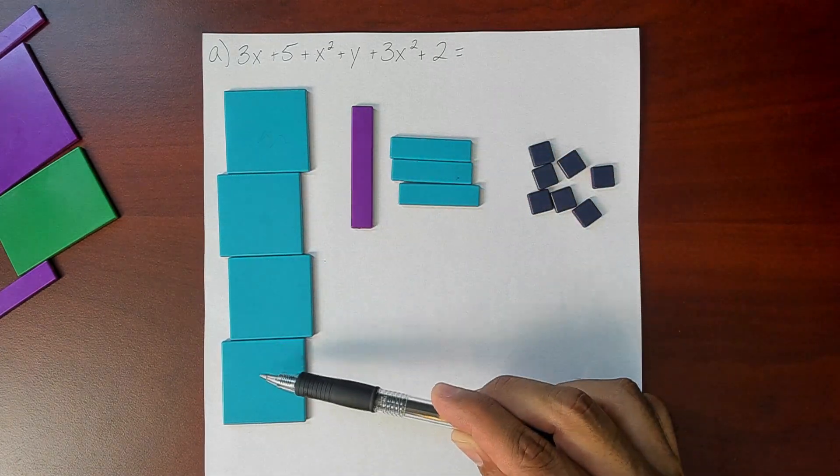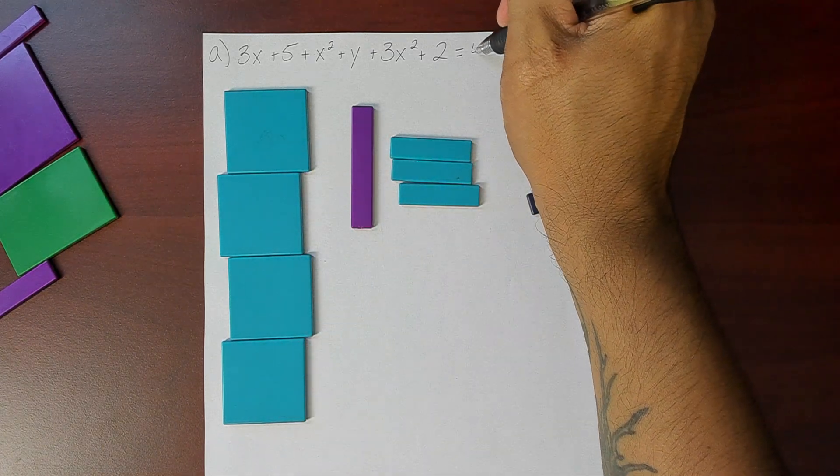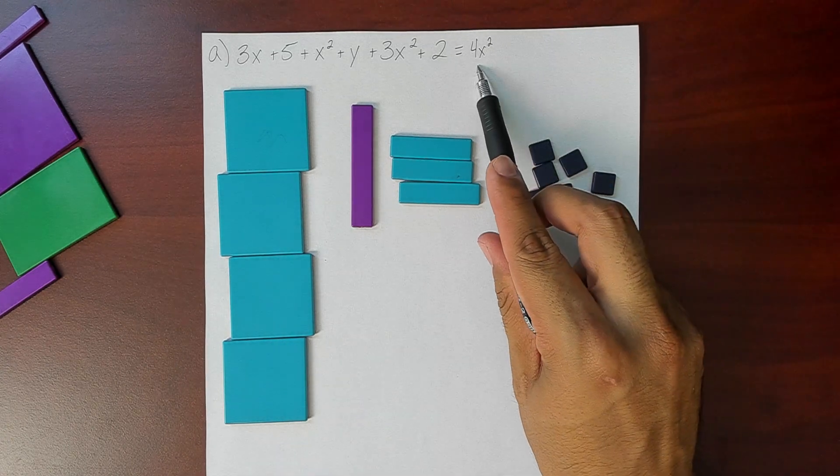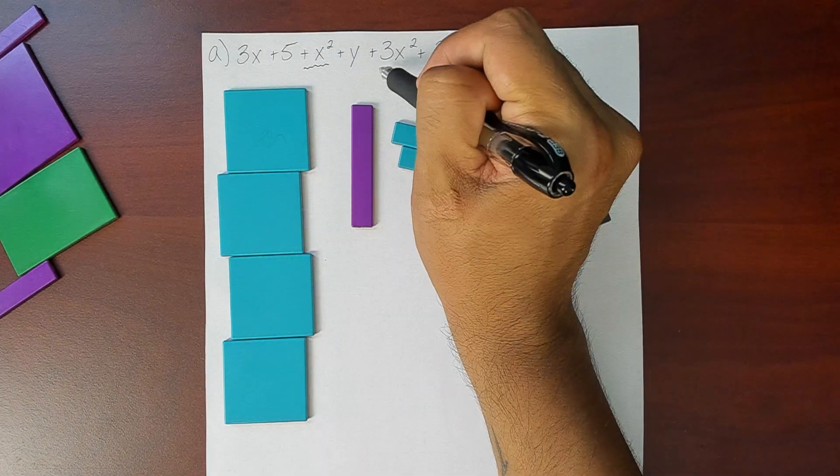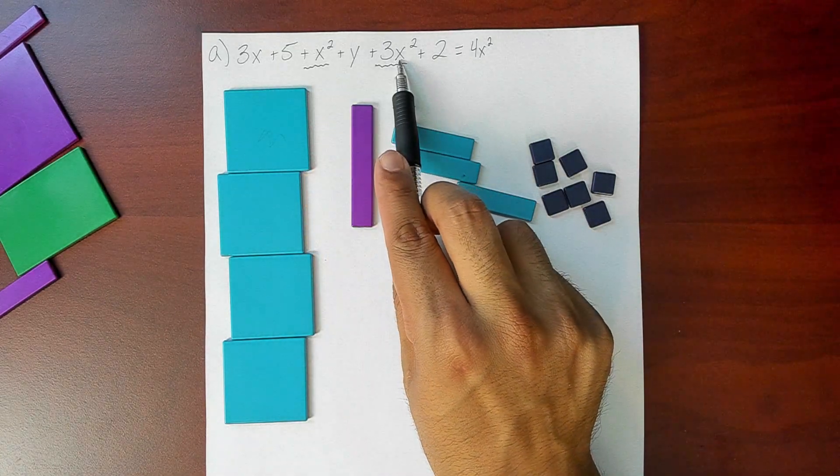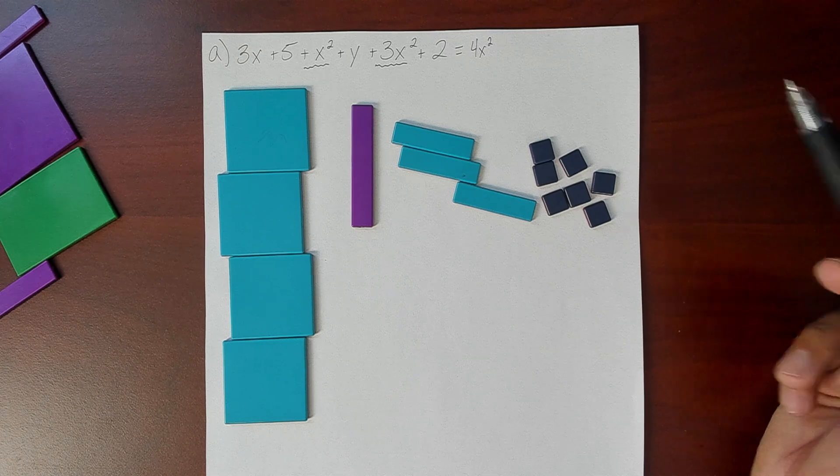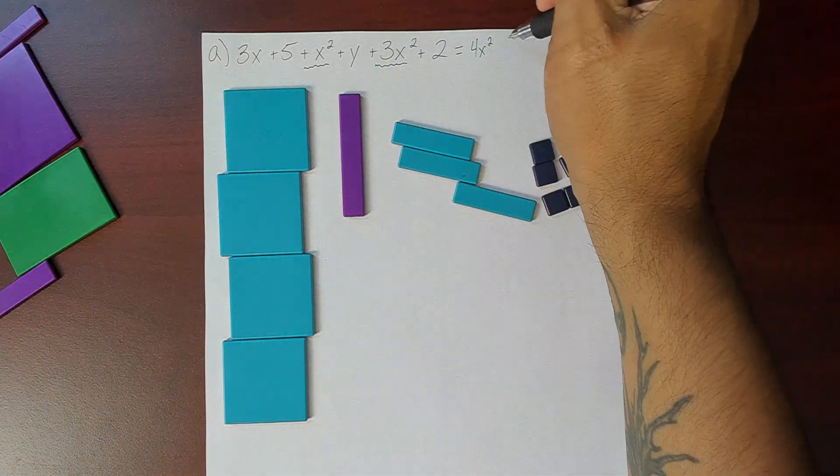And if you notice we now have one, two, three, four x squared tiles. Where did we get those four x squared tiles? Well I started with one x squared tile and then I added three more x squared. Plus three x squared becomes four x squared tiles. I then have a y tile, so I'm going to write plus y.